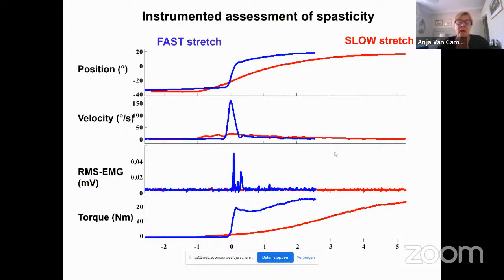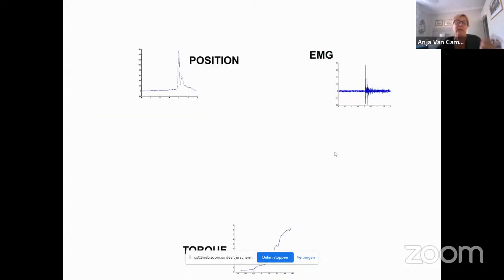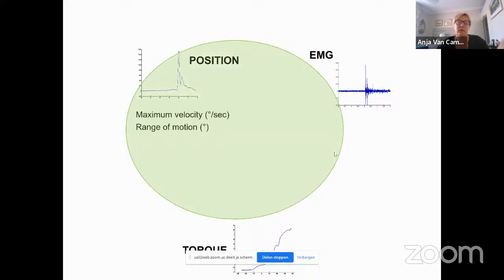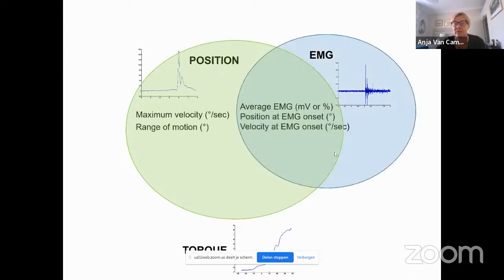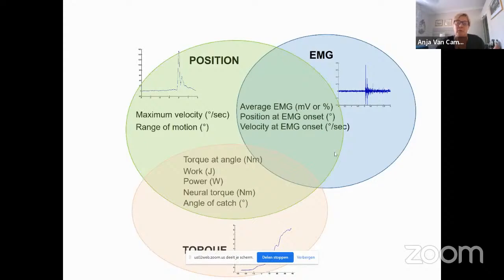The slow velocity shows a torque that goes up gradually. On top of this, the fast stretch shows the position stopping — which is the moment of catch we know from the Tardieu scale — then the high velocity drops, and then EMG activity appears. From this, we can derive parameters to define the type of spasticity — which can differ in different muscles and different patients — and to look at the effect of treatments and define which treatments might be a good option.